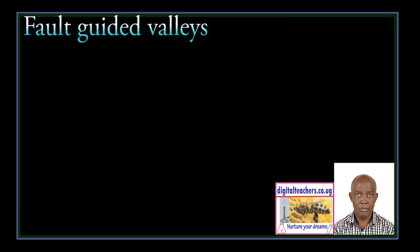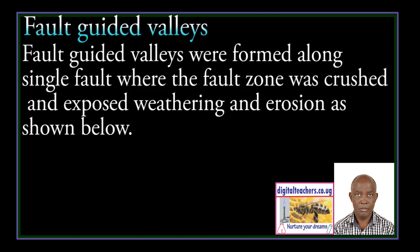Fault Guided Valleys. Fault Guided Valleys were formed along a single fault where the fault zone was crushed and exposed to weathering and erosion, as shown below.